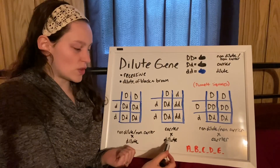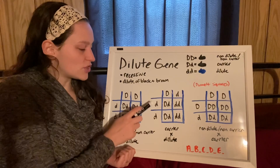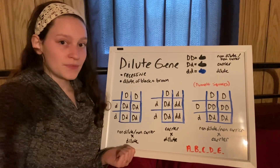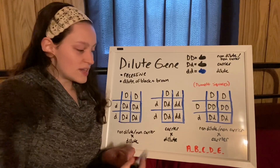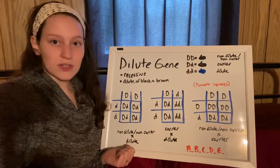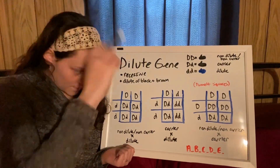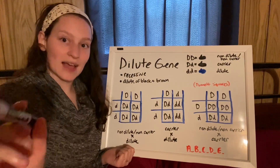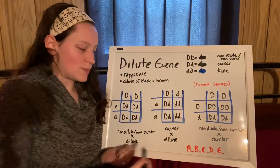Let's go back to the thought of a dilute-dilute breeding. Picture these lowercase d's all around — what are you going to get? Nothing but lowercase d's. So if you breed a dilute to a dilute of the same kind, like a blue to a blue or lilac to a lilac, all you're going to get is dilutes. The only outcome possible is dilute.